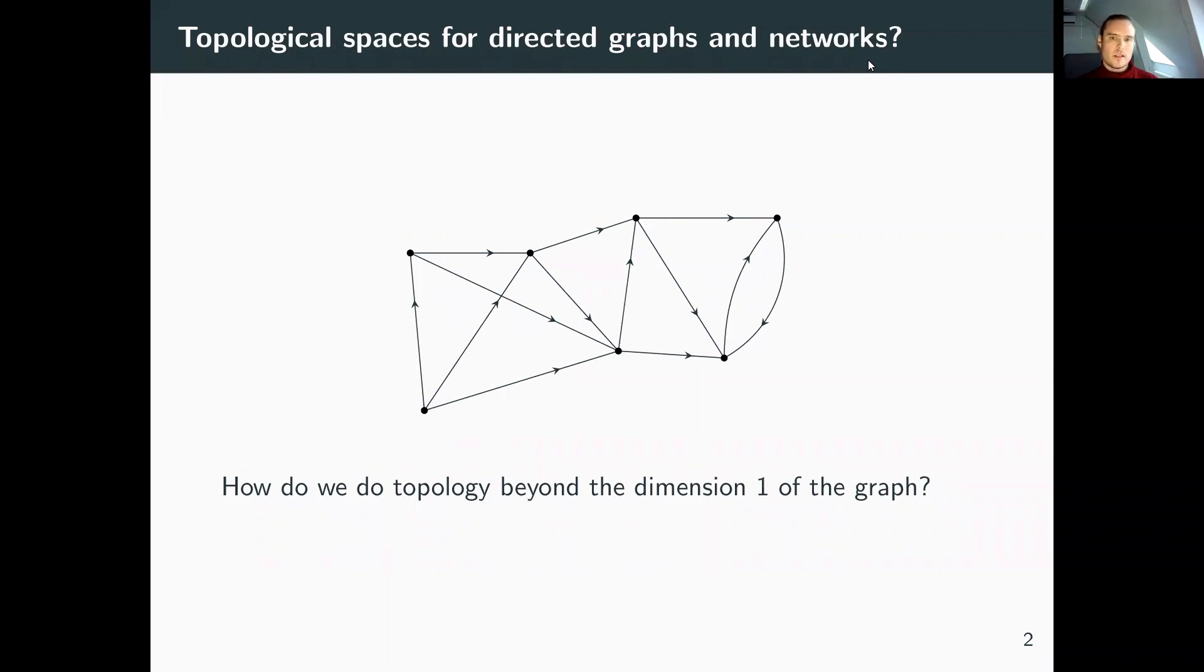The basic setting is that we have a directed graph, perhaps representing a network that we want to study using TDA tools. We need to build topological spaces that go beyond dimension one, which is the dimension of the graph. Graphs are one-dimensional objects, so we need to put some higher dimensional topology on them.